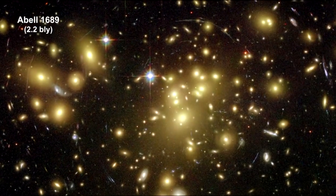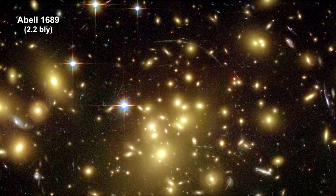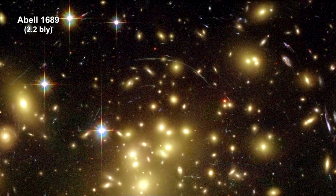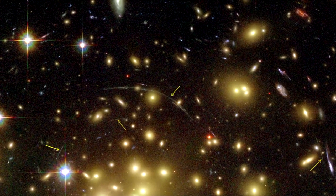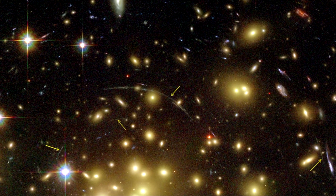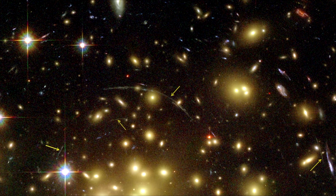This is Abel 1689, 2.2 billion light years away. It's one of the most massive galaxy clusters known. Its gravity acts like a 2 million light year wide lens in space.